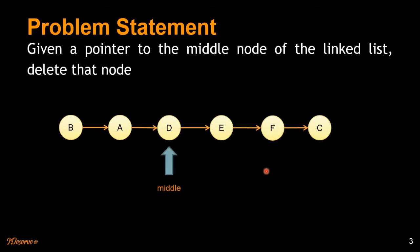The trick to solve this problem is we will copy the next node's data into this middle node. From the middle node we can only traverse forward, we can't go backwards.